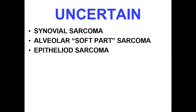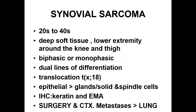There are certain tumors whose origin is not very clearly known. Among this group, synovial sarcoma is commoner as compared to others, such as alveolar soft part sarcoma and epithelioid sarcoma. Most patients with synovial sarcoma are between 20 to 40 years of age, and the tumors are situated in the deep soft tissues, especially the lower extremity around the knee, joint, and thigh.